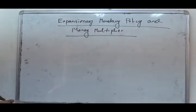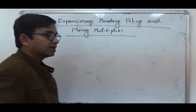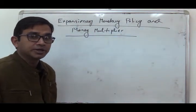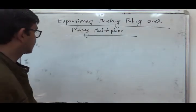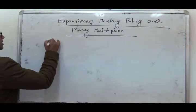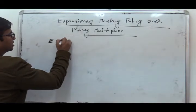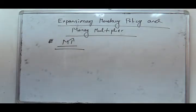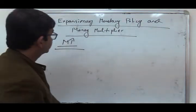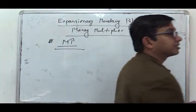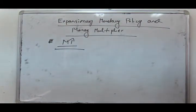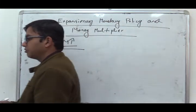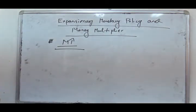Today we will discuss the effects of Expansionary Monetary Policy in the simultaneous equilibrium of commodity and money markets. Expansionary Monetary Policy means increasing money supply. Money supply can be increased in different ways — one instrument is the increase in money supply by printing new notes and currencies and circulating them.